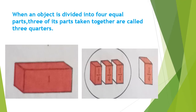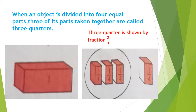When an object is divided into four equal parts and three of its parts are taken together, then it is called three quarters. As you can see in this picture, there is one whole object. We have divided it into four equal parts, but only three parts are taken together. So it is known as three quarters, and three quarters is shown by a fraction as three upon four.